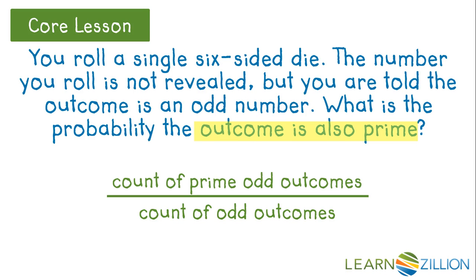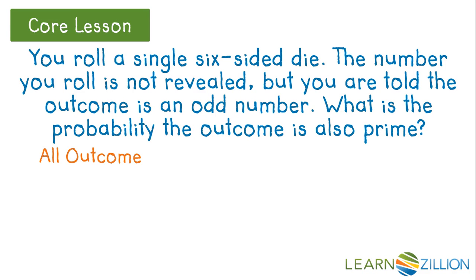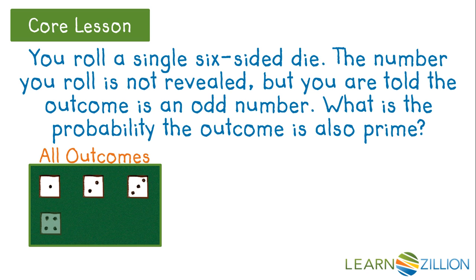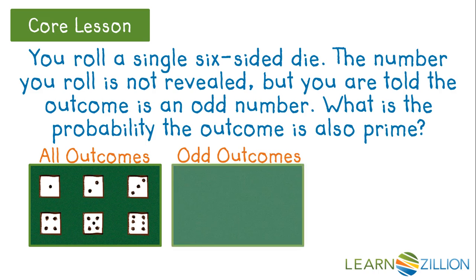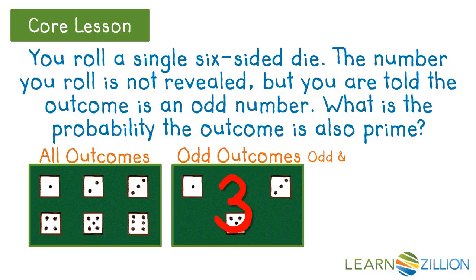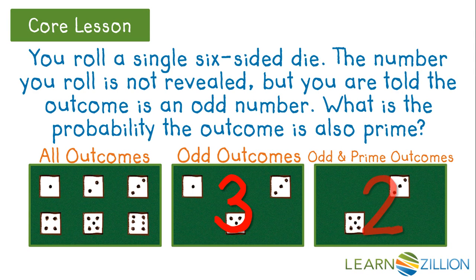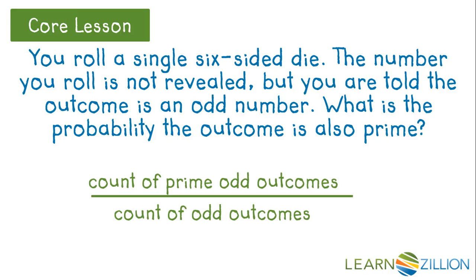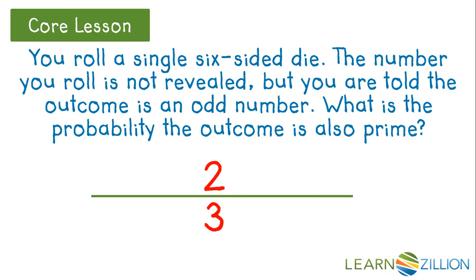Now let's find these counts. There are six total outcomes possible on a standard die. The odd outcomes of these six are one, three, and five, so we have a total of three outcomes that are odd. Now let's look at outcomes that are both prime and odd. Of one, three, and five, only three and five are prime — we do not consider the number one to be prime. Therefore our total here is two. Substituting these values back into our fraction, we find the probability of rolling a prime outcome given that it is odd is two-thirds.